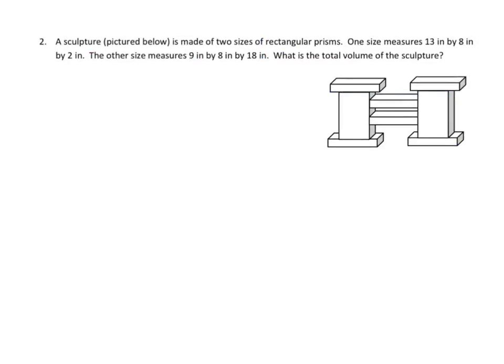In this problem we have a sculpture made of two sizes of rectangular prisms. One size is 13 by 8 by 2, and the other size measures 9 by 8 by 18. We need to find the total volume of this structure. We need to decide which measurements belong to which prisms. Looking at the representation, the width for both prisms has to be the same, and both sets have an 8 — that's our common measurement.